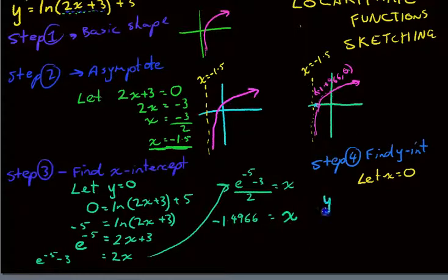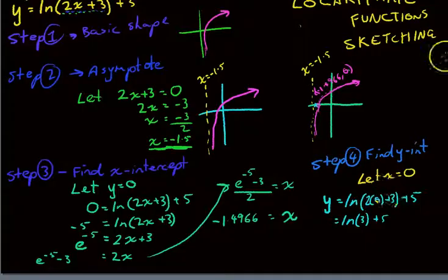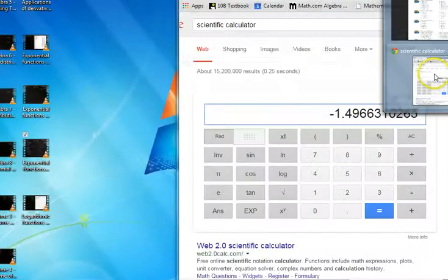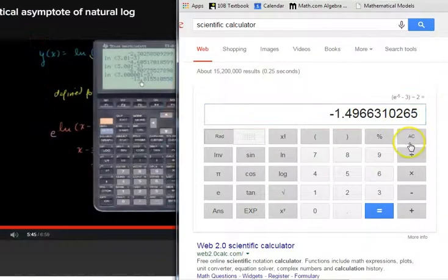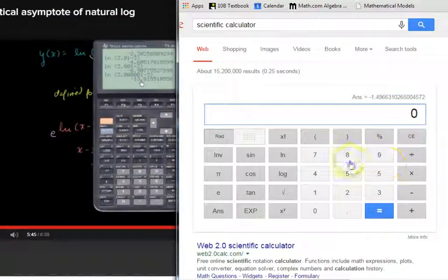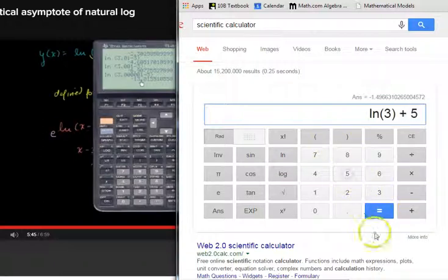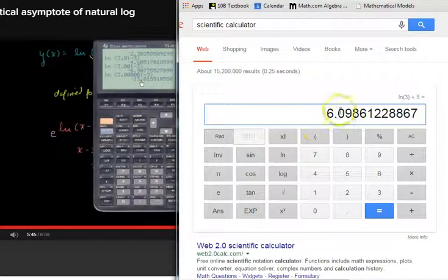So, that'll be y equals ln 2 times 0 plus 3 plus 5. Alright, so 2 times 0 is 0. It's not 2. I know people stuff that up a lot. ln 3 plus 5. Now again, we get our calculator out wherever it is. ln 3 plus 5 and we get 6.09.